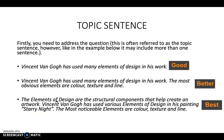The best topic sentence is: 'The elements of design are structural components that help create an artwork. Vincent van Gogh has used various elements of design in his painting Starry Night. The most noticeable elements are colour, texture, and line.' That's the best topic sentence because you've got to imagine that the marker doesn't know anything about what you're talking about. Your job is to explain in a straightforward way what you're going to be talking about — you've told me what the elements of design are, what artwork you're addressing, and the three main elements.